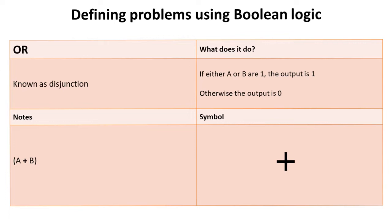Next is OR, which is known as disjunction. This says if either A or B are 1, the output is 1. Otherwise, the output is 0. You only have to have one of these inputs being 1, and the output is 1. The symbol we use for this is a plus sign. This statement reads A OR B.